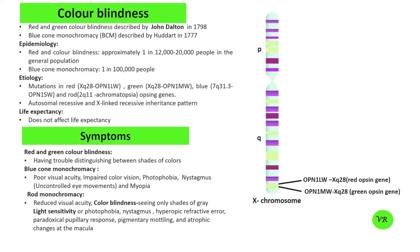Colour Blindness, also known as Colour Vision Deficiency, is a condition where an individual has difficulty distinguishing certain colours. It occurs when one or more of the cone cells in the retina, which are responsible for detecting colour, are absent, malfunctioning, or detect a different colour than normal.